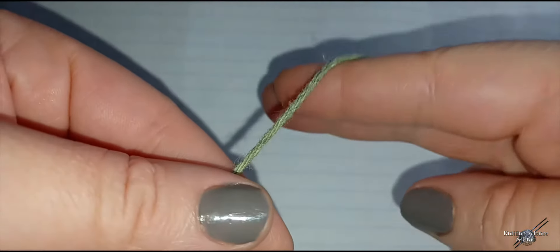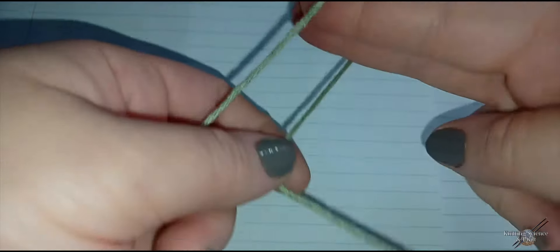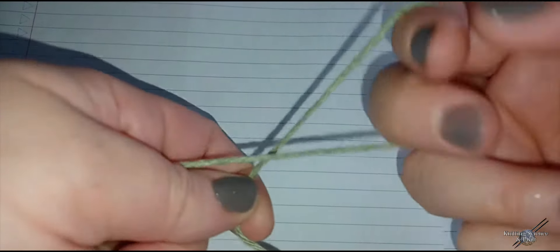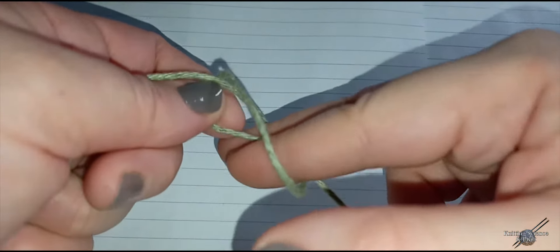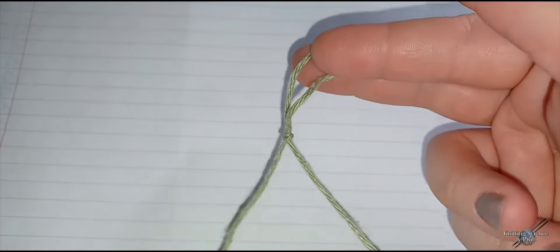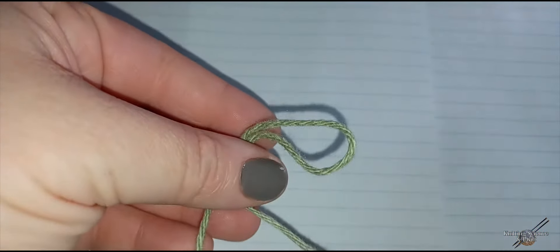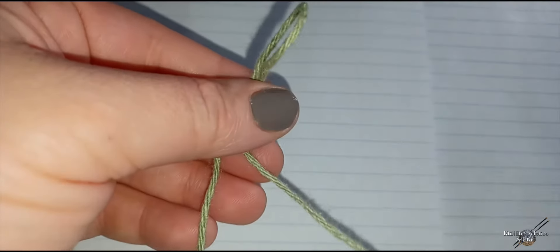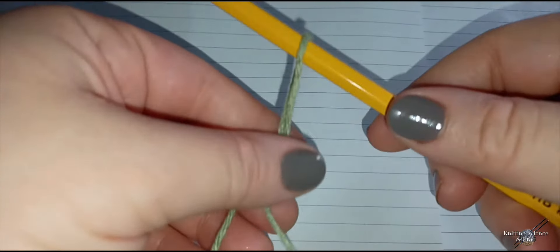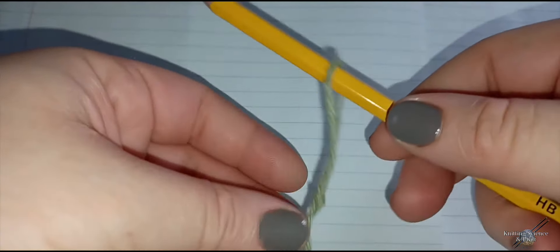First, we're going to do a basic slipknot. Take your two fingers, twirl them around, pull the yarn through, and you have a slipknot. Now we're going to insert the pencil into the slipknot and tighten the yarn.